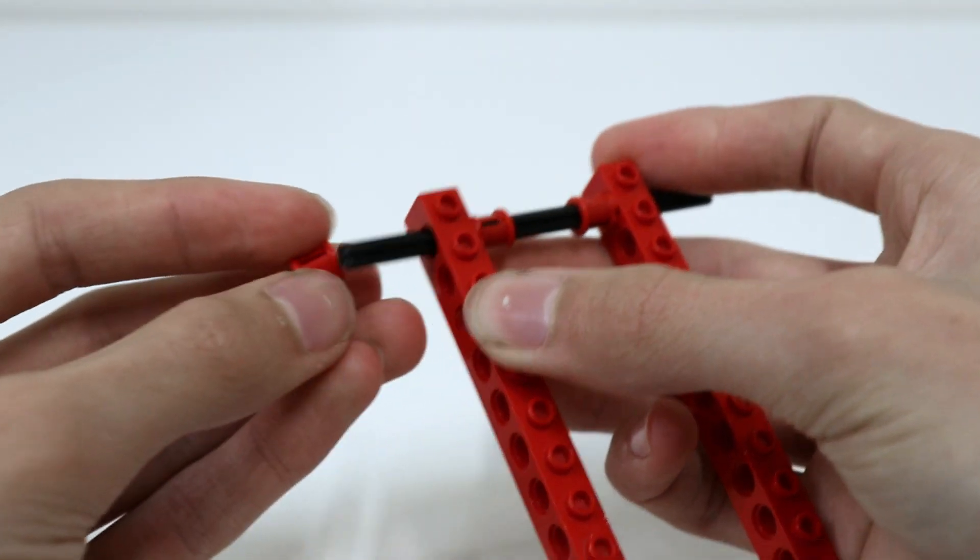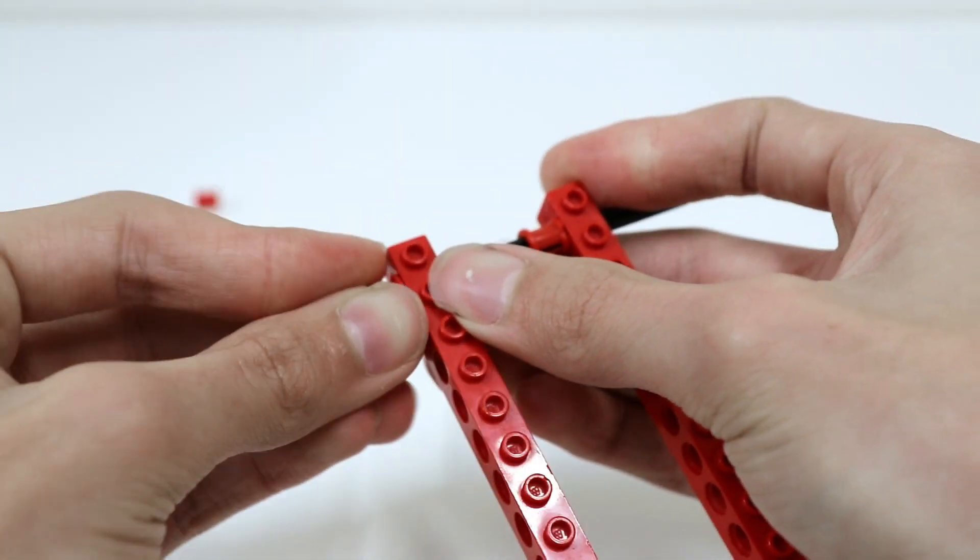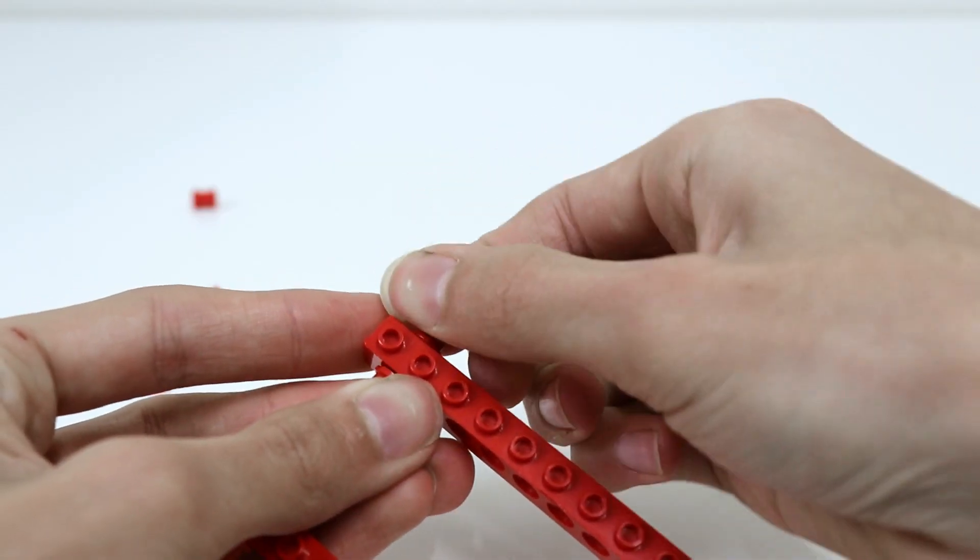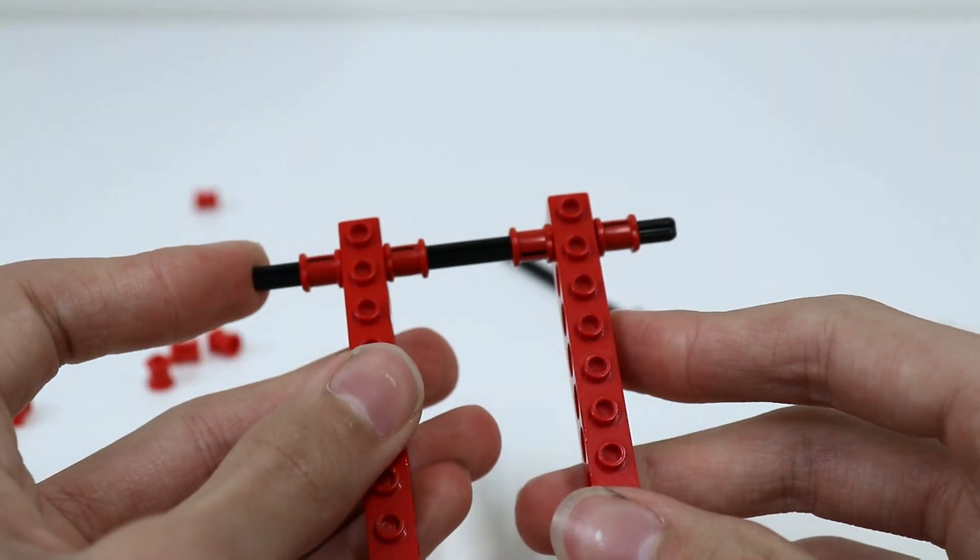Put two more of the stoppers on the outside of the bricks and then you should have something looking like this. The space in between the bricks should be about 4 studs wide.